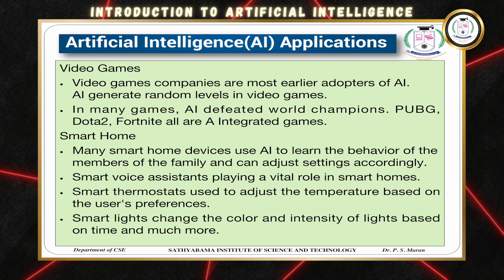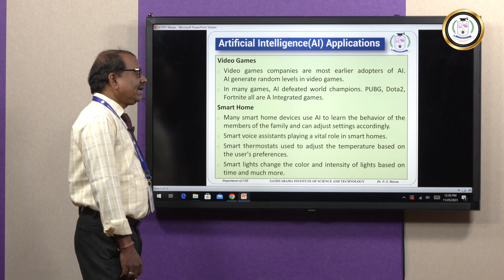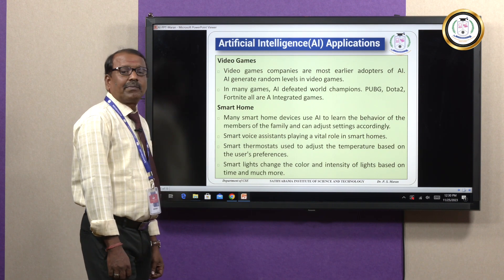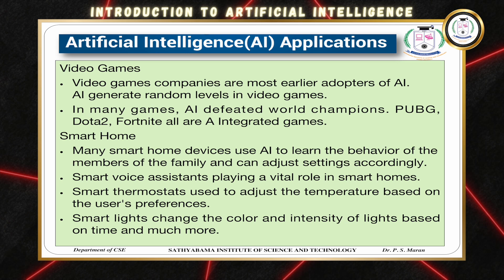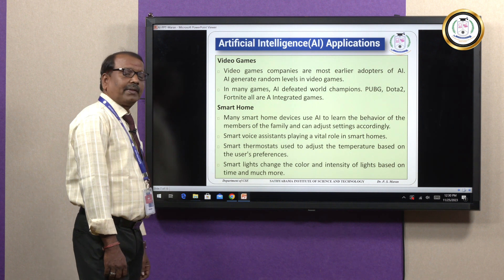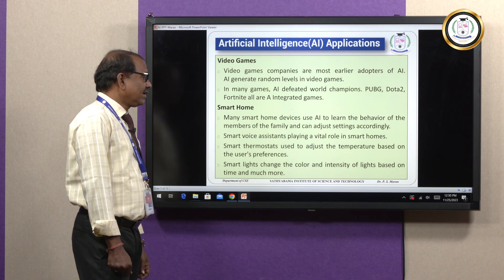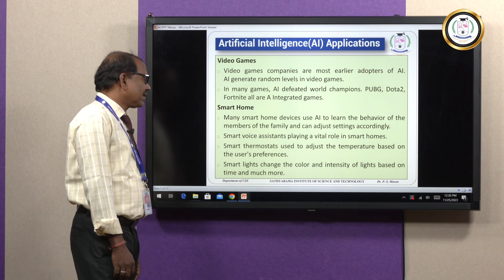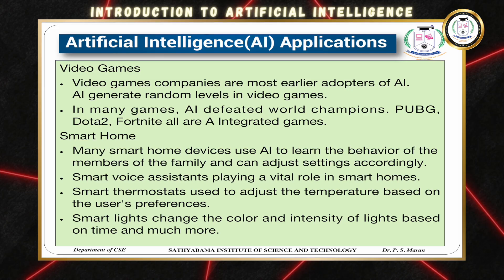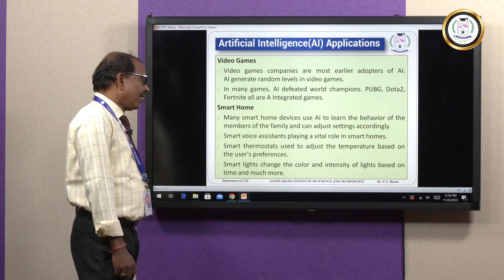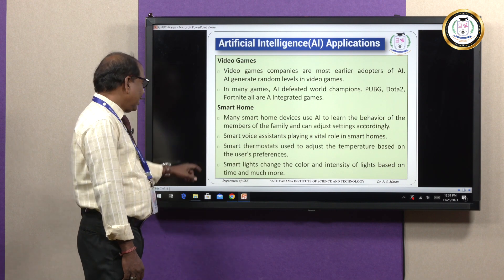In video games, there are many games adopted by artificial intelligence, and in many games the AI has defeated world champions. For example, PUBG, Dota 2, and Fortnite are all AI-integrated games. For smart homes, many home devices use artificial intelligence techniques to learn the behavior of family members and adjust settings accordingly. Smart voice assistants play a vital role in smart homes, including smart light changes in color and intensity.